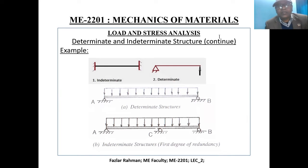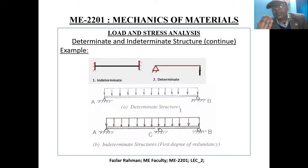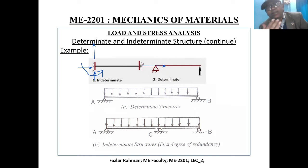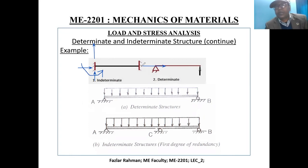Before that, let me show some examples of determinate and indeterminate structures. We have number of equations: 3 for 2D. If you have more unknowns than the number of equations, then the structure is indeterminate. In 2D, you have summation Fx = 0, summation Fy = 0, and summation of bending moment along z = 0 — that gives you 3 equations.